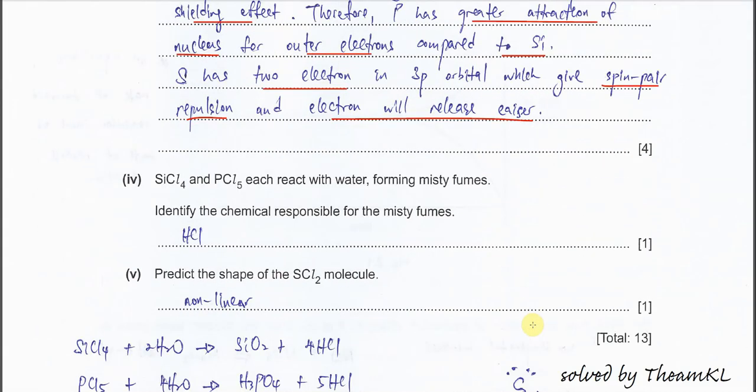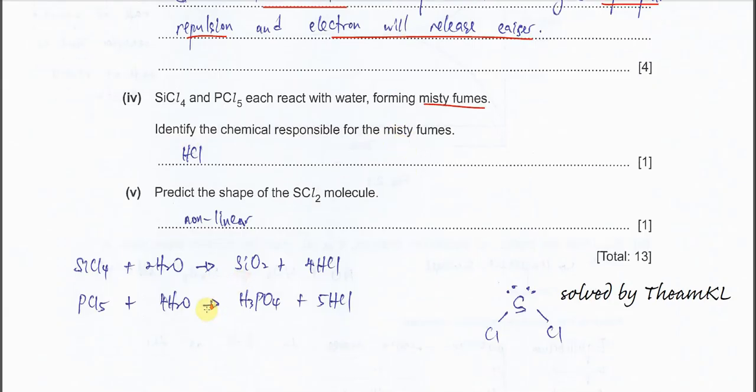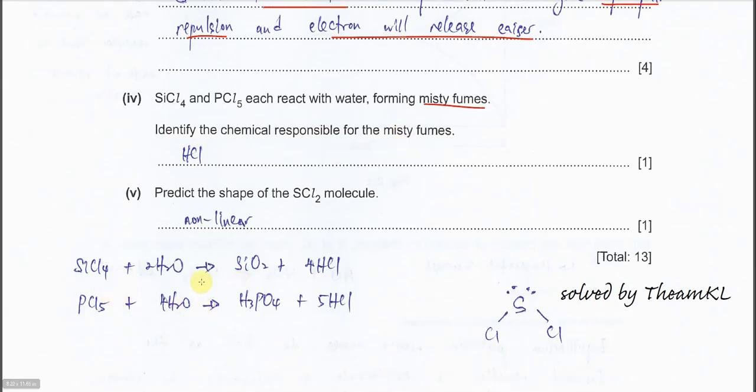Part 4. SiCl4 and PCl5 react with water to form misty fumes. Identify the chemical responsible for these misty fumes. It's quite easy. If you know the equations, you'll get the answer very fast.